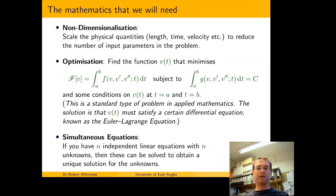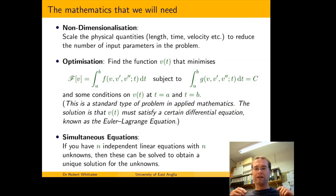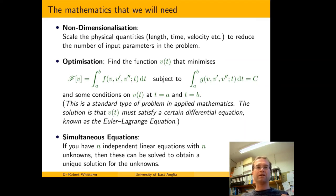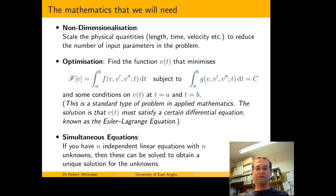Finally, something you will have seen is simultaneous equations — where you have two equations with two unknown variables and you solve them simultaneously. These problems can be extended to more equations and more unknowns. In general, if you have n independent linear equations with n unknown variables, you can solve them to find a unique solution for all n unknowns.